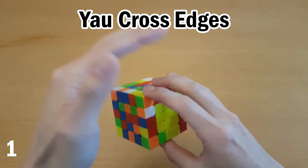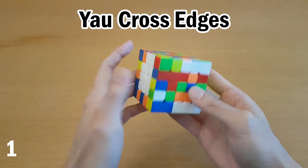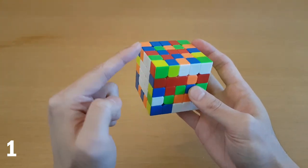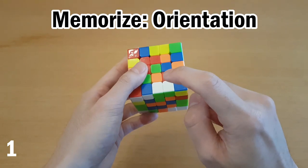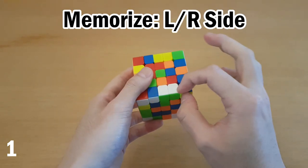That way you can turn your focus to other places where more pieces could be. Here's an example. I have white and green, so I'm going to solve these two. Now I'm going to memorize that white is on the front, or I'm going to memorize that they're on the right side.